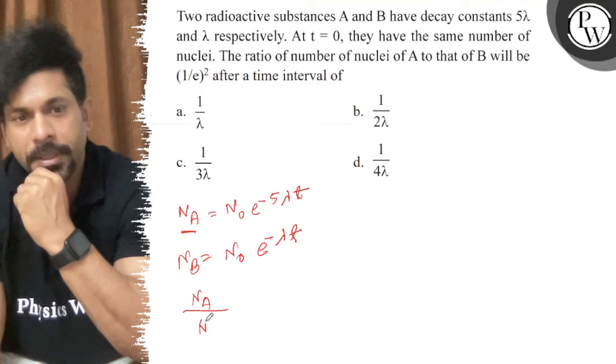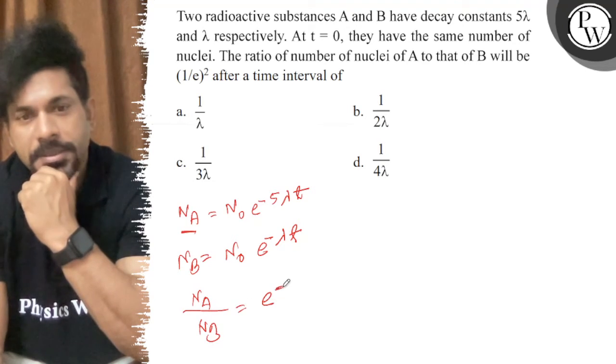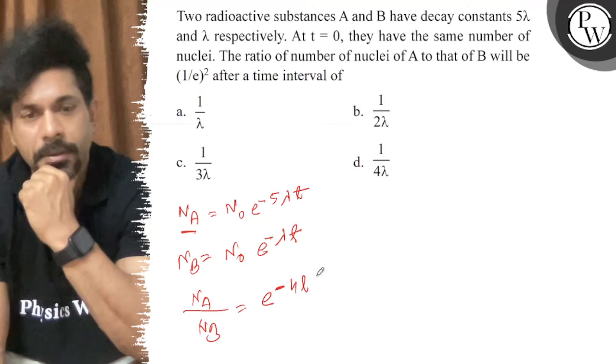N_A upon N_B is equal to e to the power minus 4λt.